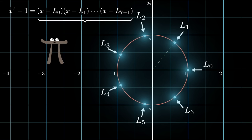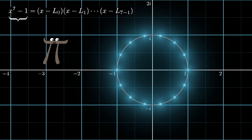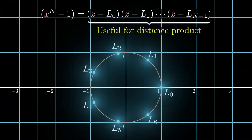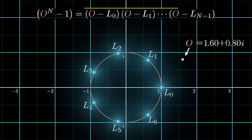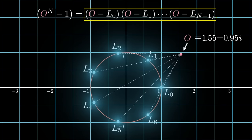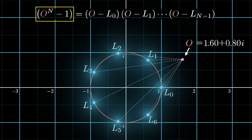Take a moment to appreciate just what a marvelous fact that is. The right-hand side looks like it would be an absolute nightmare to expand — not only are there a lot of terms, but writing down each complex number lands us in a mess of sines and cosines. But because of the symmetry of the setup, when all the algebraic dust settles, it simplifies down to just x⁷ − 1, with all other terms canceling. Of course, there's nothing special about seven: if you have n points evenly spaced around a circle, they are the roots of x^n − 1 = 0.